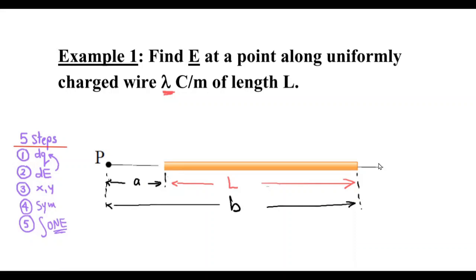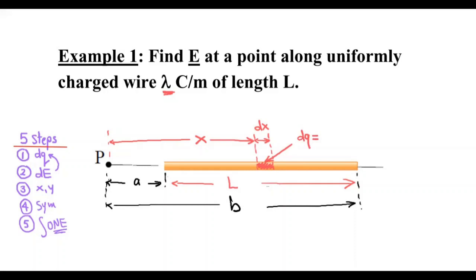Remember the five-step strategy from the previous video. Step one: we pick a very small element. We assume that at distance x we take a very small length dx. This length dx tends to zero, so this very small length of the wire will contain some small charge.